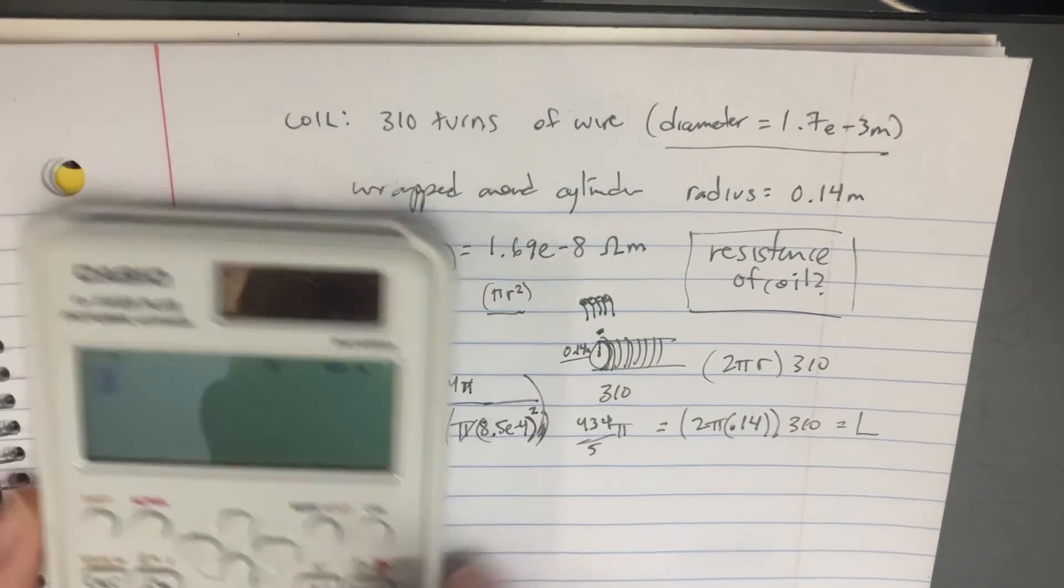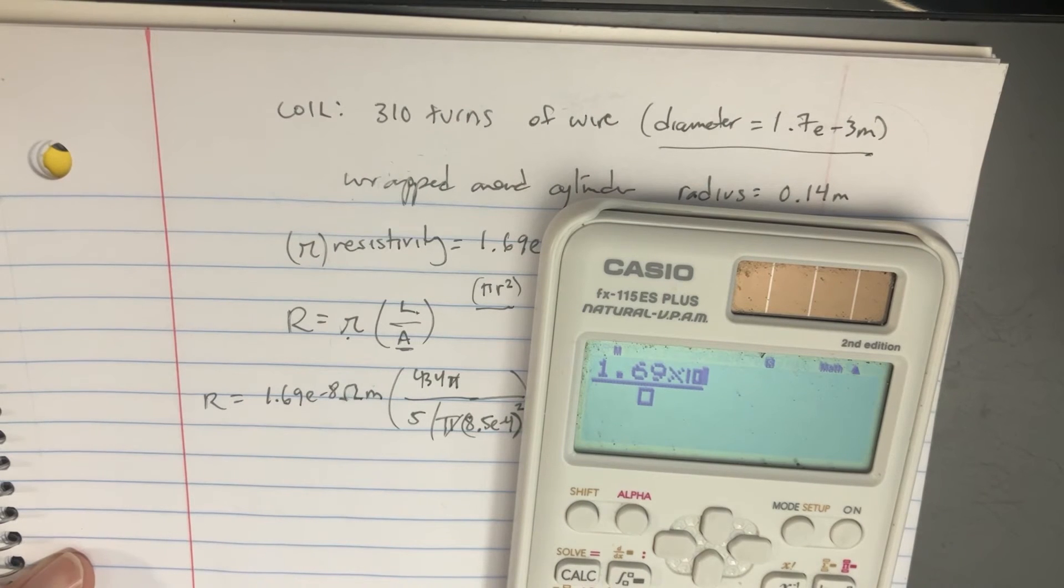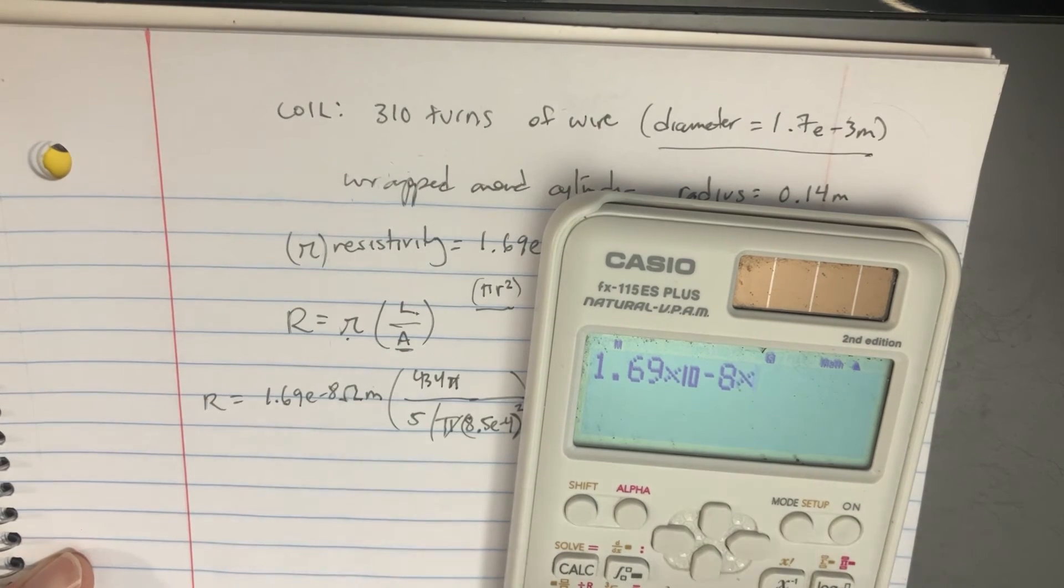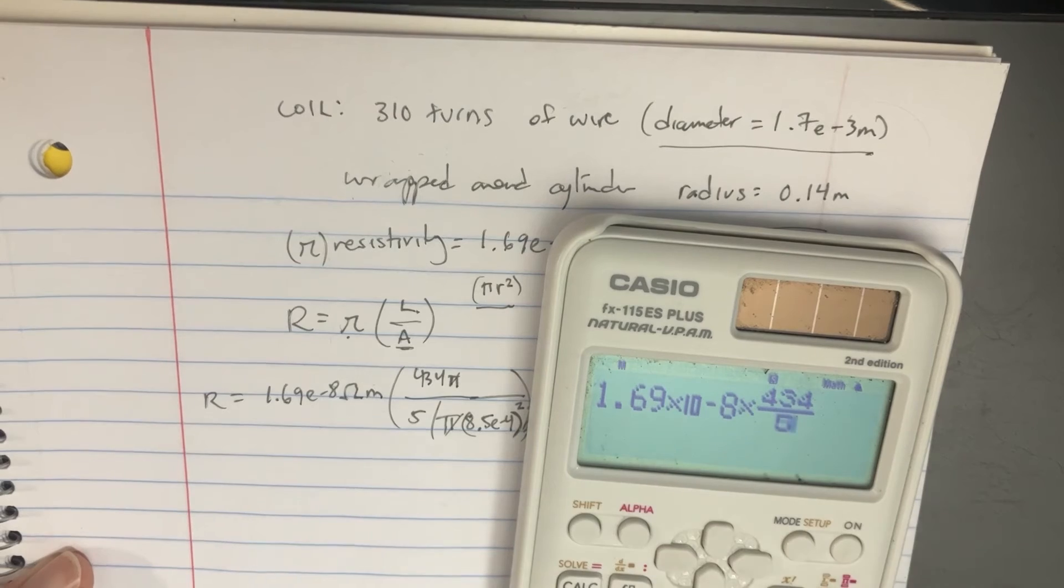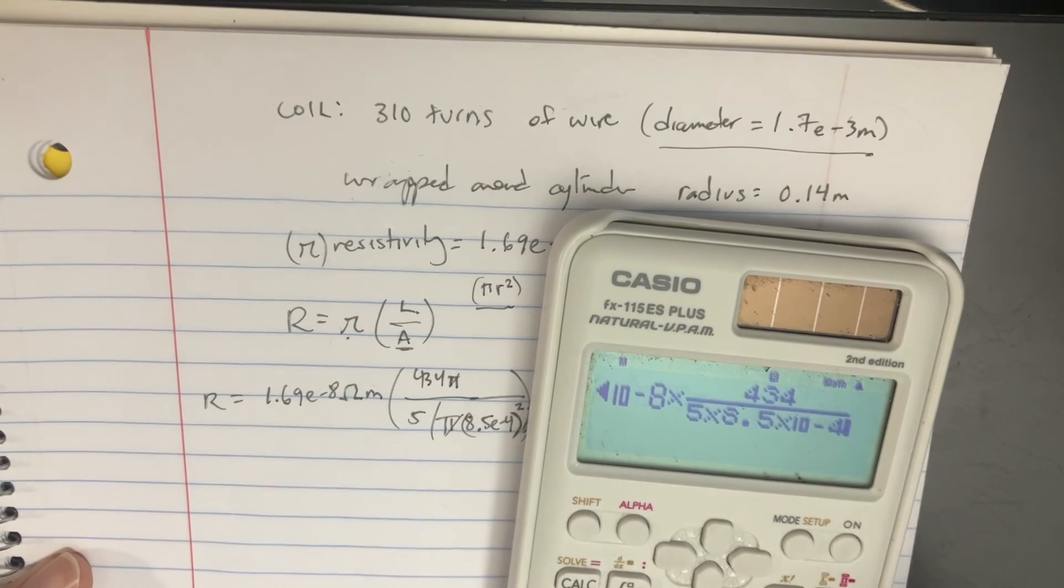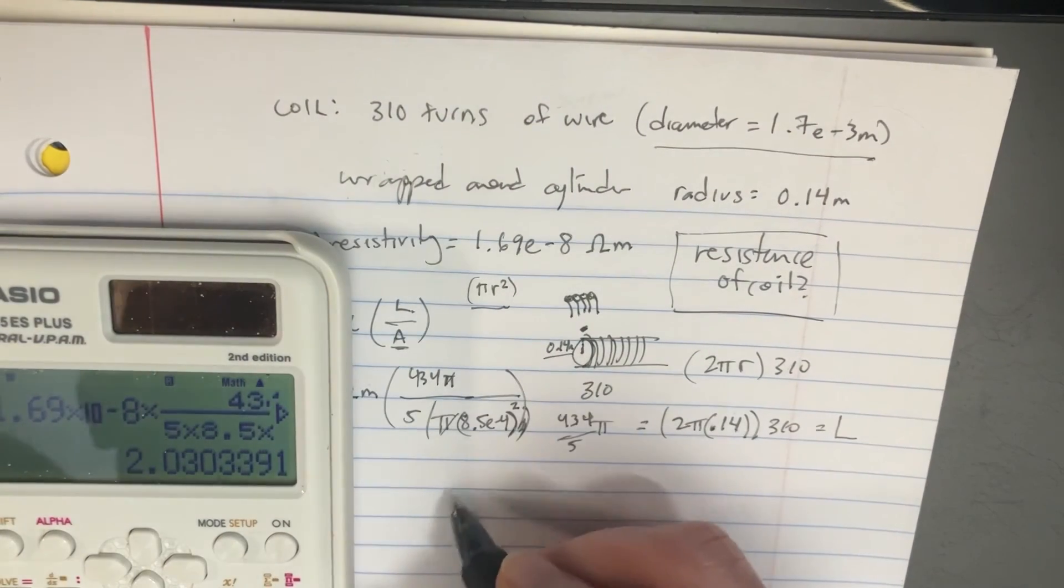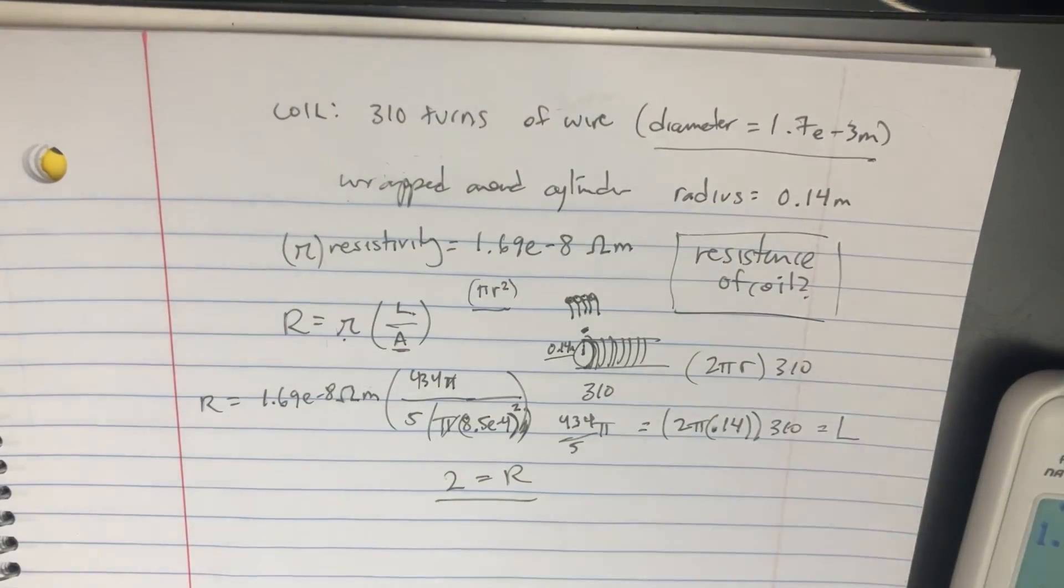So we'll go 1.69e-8, that's going to be times 434 divided by 5 times 8.5e-4 squared. And yeah, we get the answer of 2. That's what resistance is here. 1.800e-5 ohms.